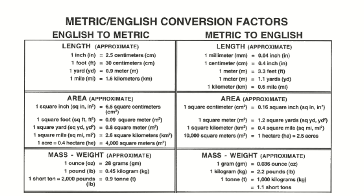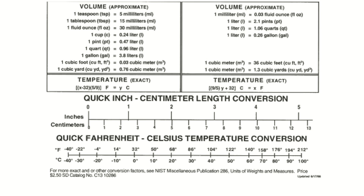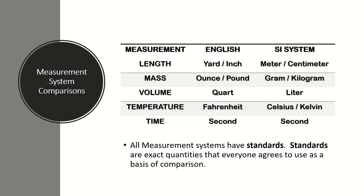We use conversion factors to change from English to metric and vice versa, and these are readily available online. For a brief comparison of the two systems: for length, the English system uses yards or inches while SI uses meters or centimeters; for mass, English uses ounces or pounds while SI uses grams or kilograms; for volume, English uses quarts while SI uses liters; for temperature, English uses Fahrenheit while SI uses Celsius and Kelvin; and for time, both systems commonly use seconds.